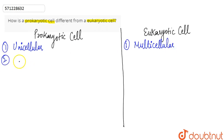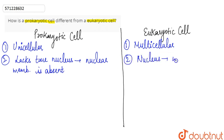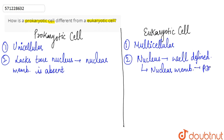The second point of difference is that the prokaryotic cell lacks a true nucleus — the nuclear membrane is absent and is not present around the nucleus. That is why we say that prokaryotic cells do not have a true nucleus. In the case of eukaryotic cells, the nucleus is well defined, meaning the nuclear membrane is present around the nucleus.